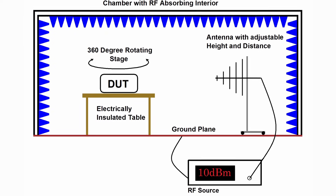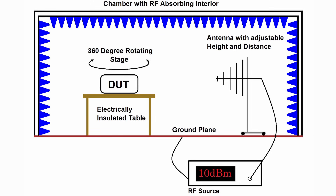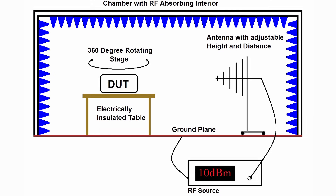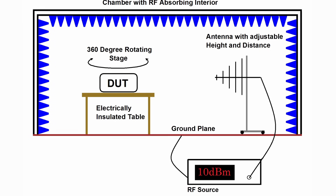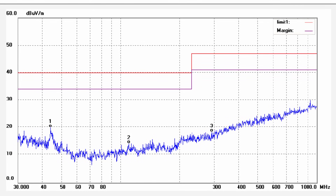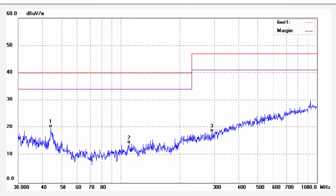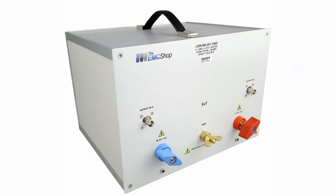With radiated emissions testing, there is a calibrated antenna positioned a specific distance away from the device under test — usually 3 meters or 10 meters. An automated process adjusts both the antenna's height and polarity to find the maximum emission levels, and the device under test sits on a large turntable that can rotate 360 degrees to measure emissions from all angles. A spectrum analyzer is connected to the antenna to measure and record the emissions data. The regulations call out a specific frequency range to test across — for radiated emissions it is typically 30 MHz up to 1 GHz, but it can be higher depending on the standard.